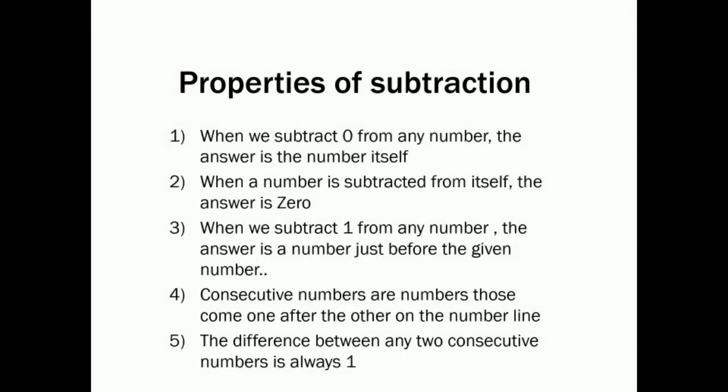Here we have five properties. The first one is: when we subtract zero from any number, the answer is the number itself. It means that when we subtract any number with zero, we will get the same number.